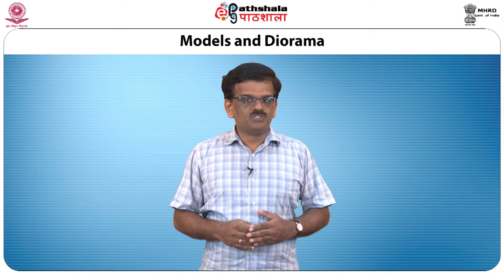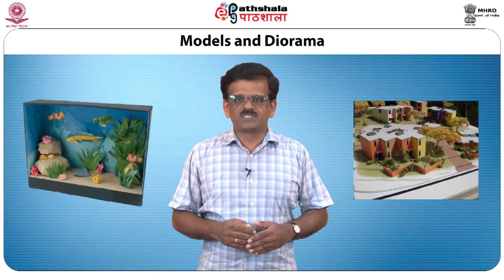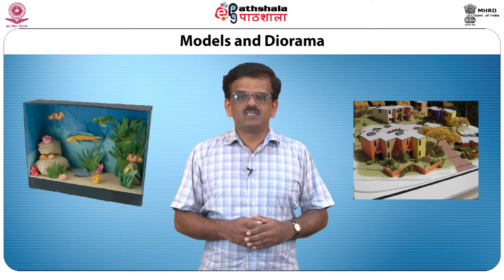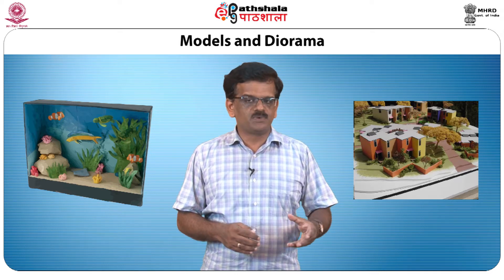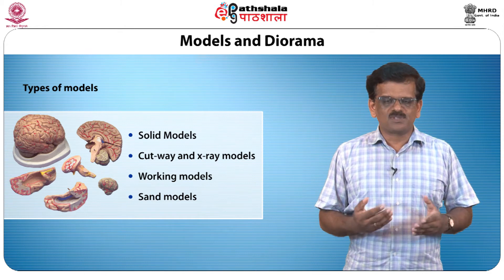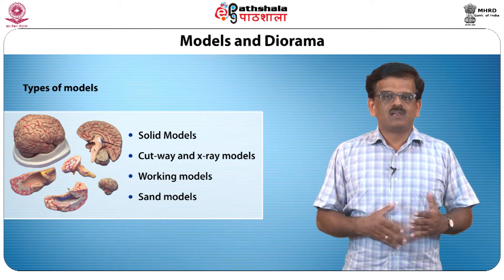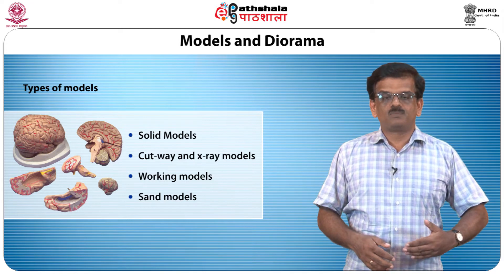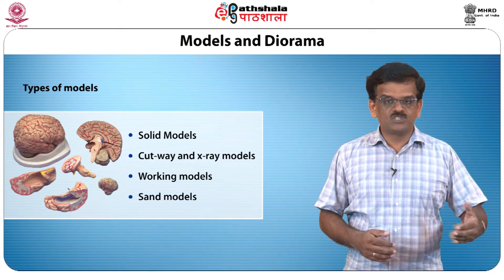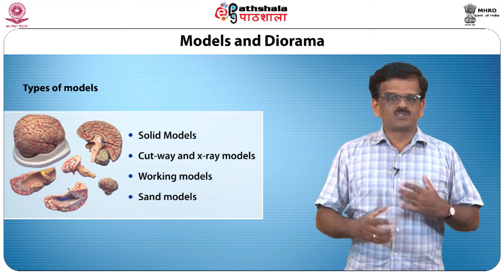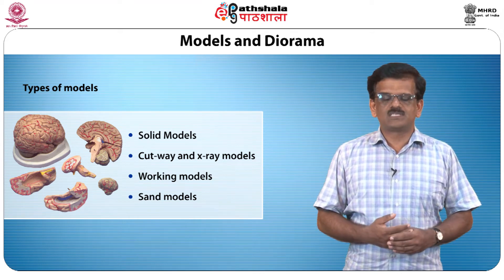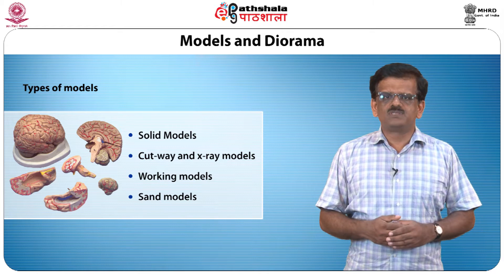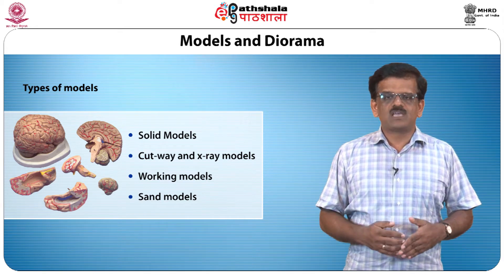First, let us talk about models and diorama. Models and diorama present a miniature replica of objects or reality, but the diorama is a scenic representation of the original with specimens, models, and paintings. There are several types of models: solid models like a railway engine, cutaway or x-ray models like a human heart or digestive system, working models like a chipping machine, and sand models of a person's face or popular personalities. Models are used in method demonstrations, group meetings, training programs, and exhibitions.